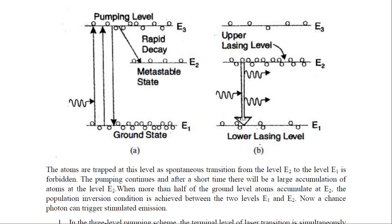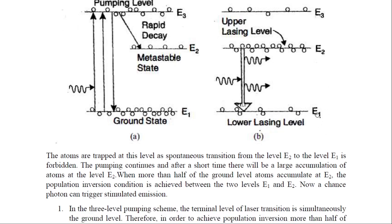Now, a chance photon can trigger stimulated emission. If we make light incident upon atoms which are in the state E2, then we can get stimulated emission. This picture B represents the population inversion condition — it clearly shows the number of atoms in the E2 state is greater than the number of atoms in the ground state E1. Whenever light is incident upon these atoms in E2, there will be a stimulated emission process as they come down to the E1 state.